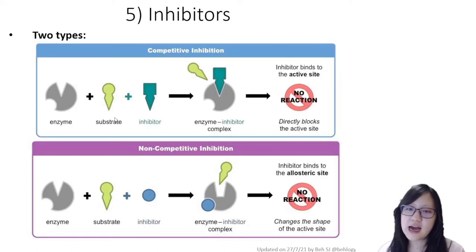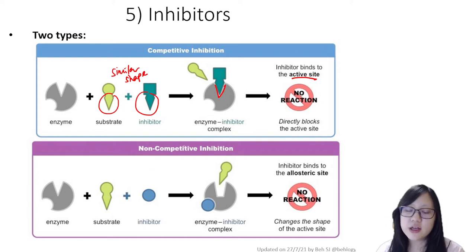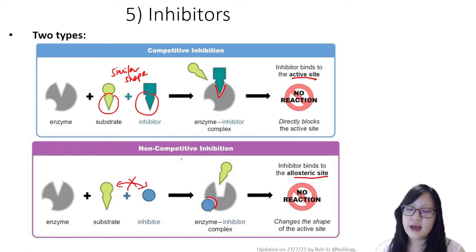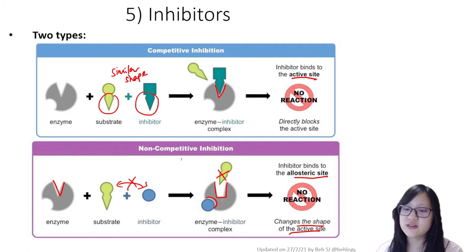Looking at this diagram, we can see how the competitive inhibitor is similar in shape to the substrate — not exactly the same, but similar — and therefore they can both bind to the active site. This causes the inhibitor to directly block the active site, resulting in no reaction. In non-competitive inhibition, the inhibitor is not the same as the substrate at all. The inhibitor binds to a different site called the allosteric site, and while doing so, it changes the active site shape, causing there to be no reaction. The substrate cannot bind to the active site because the active site has changed shape.